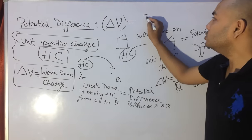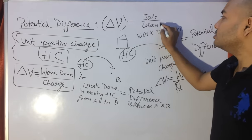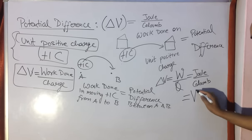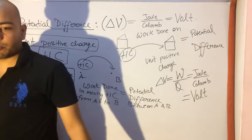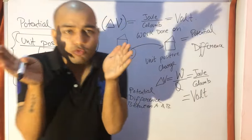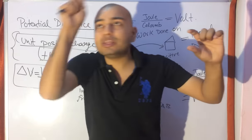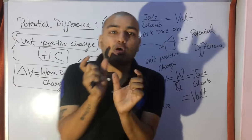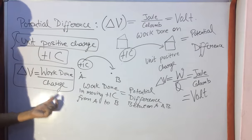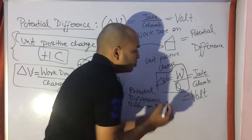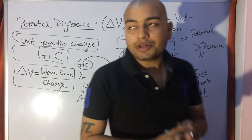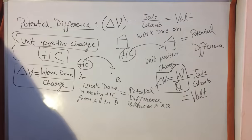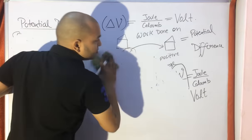Joules per coulomb has a special name — volt. So the SI unit of potential difference is volt. Potential difference is work done per unit charge: ΔV = W/Q. We take a unit positive charge, displace it between two points, and the work done in that displacement is the potential difference. Let us do a numerical to make this clear.